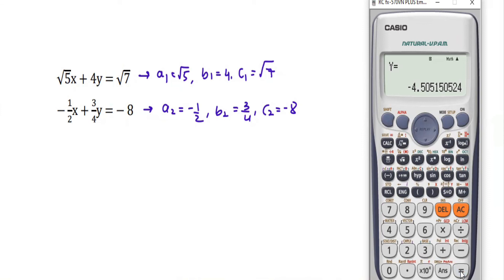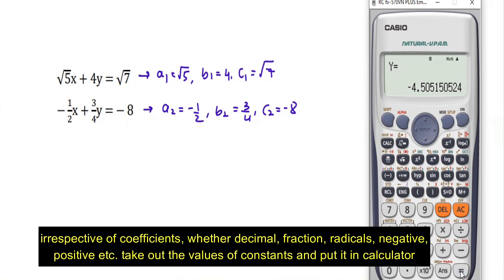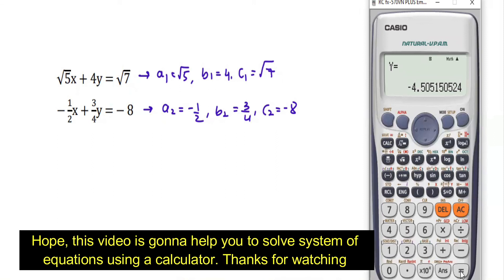This is how you calculate a system of equations. Irrespective of the coefficients — whether decimal, fraction, radical, negative, or positive — you just need to extract the values of A1, B1, C1, A2, B2, C2 and enter them into the calculator. Hope this video helps you solve a system of equations using the calculator. Thanks for watching.